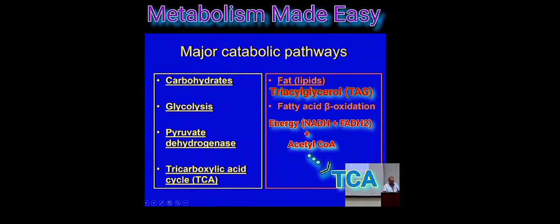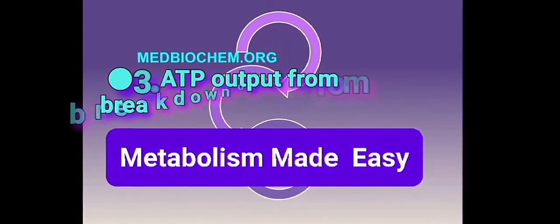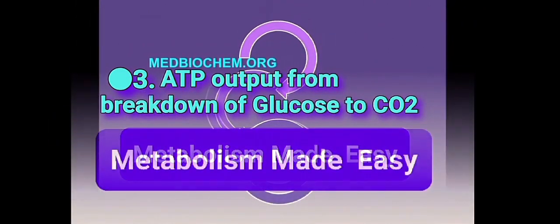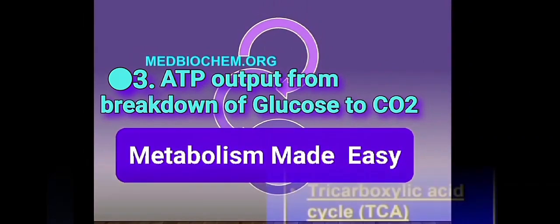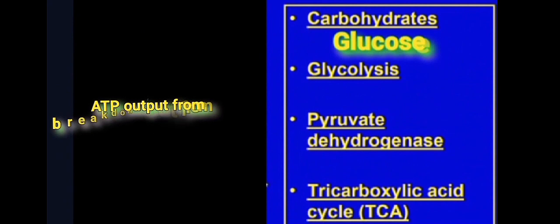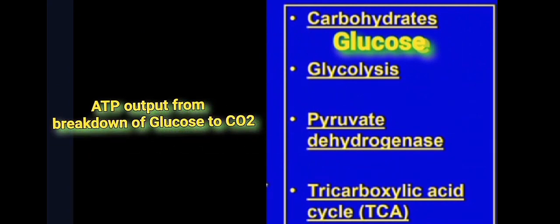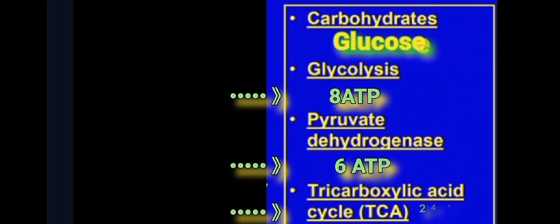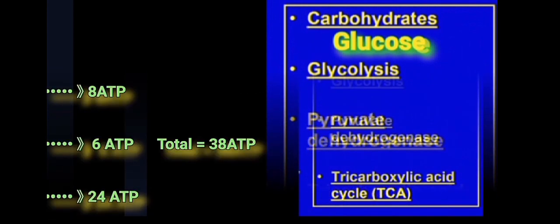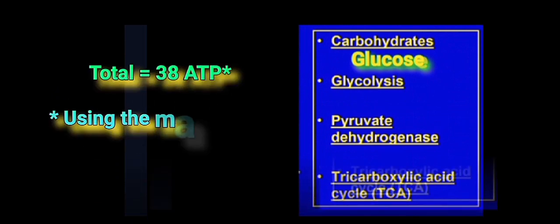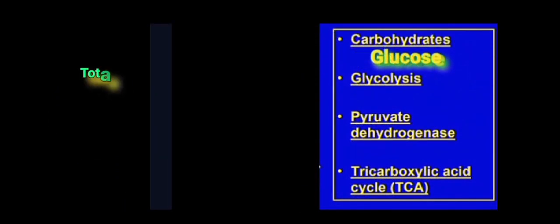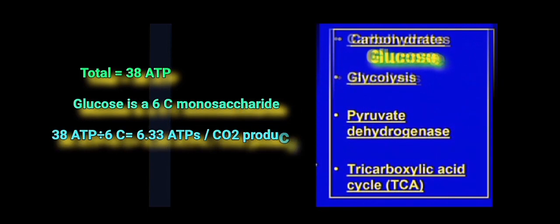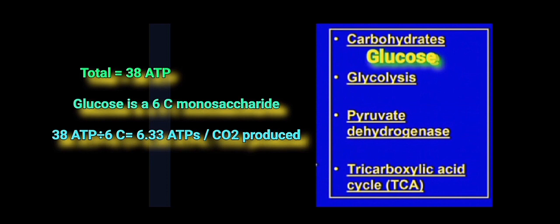Glucose, a six-carbon monosaccharide, is catabolized sequentially by glycolysis, pyruvate dehydrogenase, and the TCA cycle to yield 8 ATPs, 6 ATPs, and 24 ATPs respectively, for a total output of 38 ATPs. Dividing 38 ATPs by 6 carbons in glucose gives you 6.33 ATPs produced per CO2 produced.